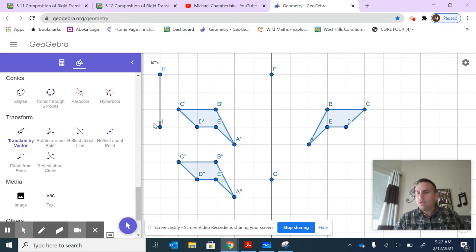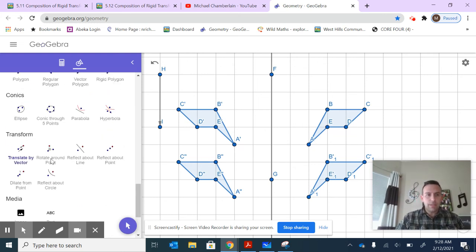What's interesting is to do that in the opposite order. If I take this original figure and translate it by a vector first, and then reflect it, it would land on that final image as well. You can see how the movements could be the same either direction.